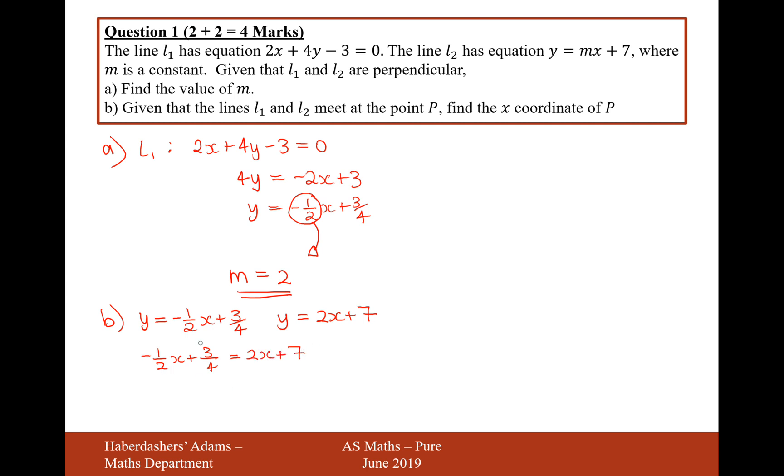Now to get rid of these fractions, I want to times everything by 4. So it's going to be minus 2x plus 3 equals 8x plus 28. Then work out what x is equal to. If I move all my x's onto the right-hand side and subtract the 28 onto the left-hand side, that'll be minus 25 equals 10x. Therefore, x is going to equal minus 2.5.